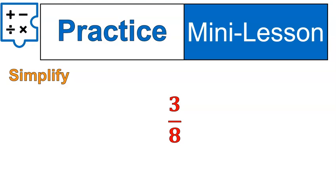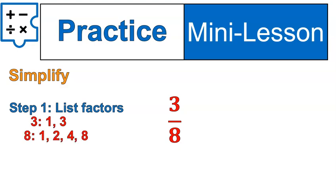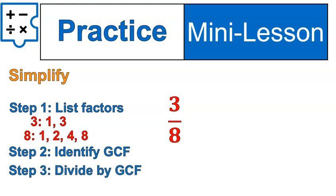Now did this one give you a little bit of pause? Was it a little bit challenging? We had the factors of 1 and 3 and the factors of 1, 2, 4, and 8. So when we were asked to find the greatest common factor and divide by that greatest common factor, it made it very difficult because the only common factor is 1.